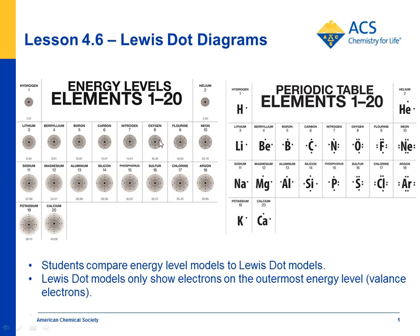We've shown them spread out evenly on the second energy level, and we've been consistent in doing that throughout our discussion of energy levels. In Lewis dot structures for oxygen, they'll only show electrons on the outermost energy level — so there are six electrons, but they don't show them evenly spread out.